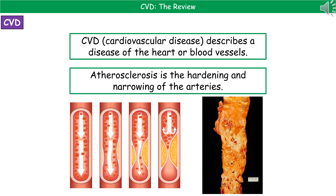If you look at the bottom left first of all, we can see on the far left hand side that's a normal artery. The blood is able to flow through, it can expand and contract as it does so — that's your healthy blood flow. As we get the deposits of fat, the yellow stuff in the walls, you can see it starts to restrict that blood flow, getting narrower and narrower until eventually it could block that artery.